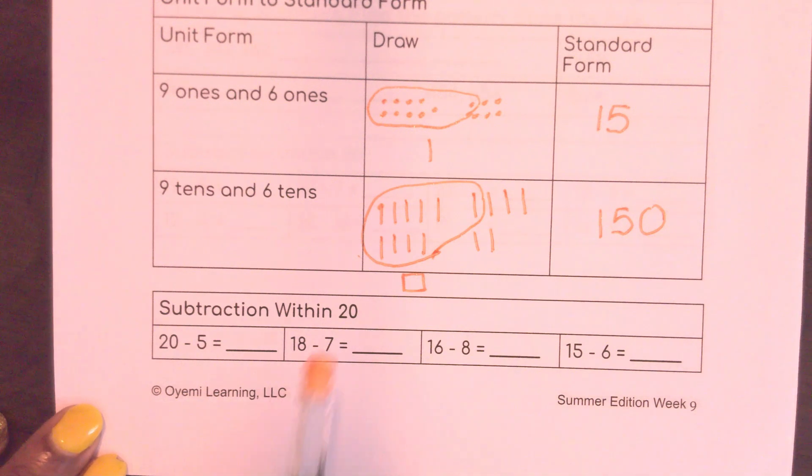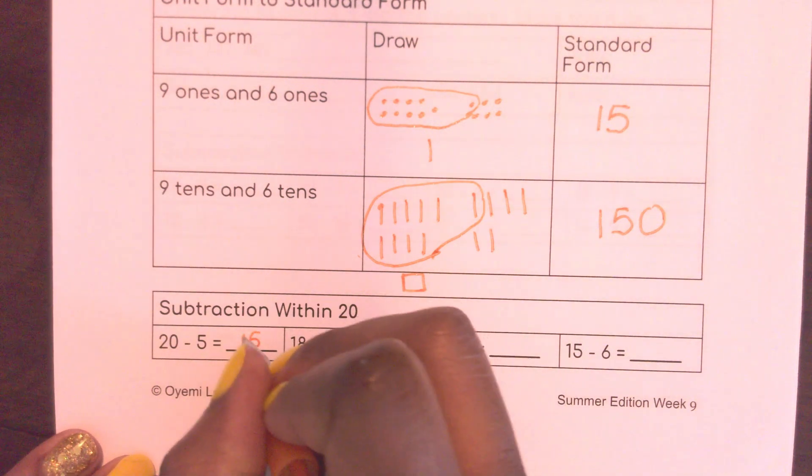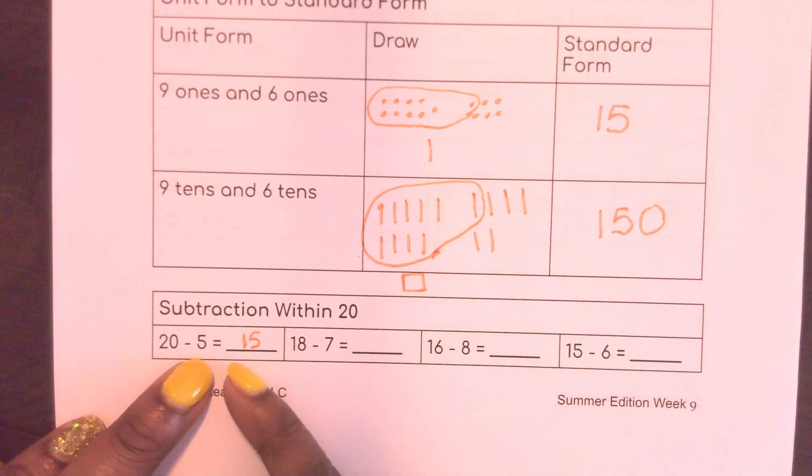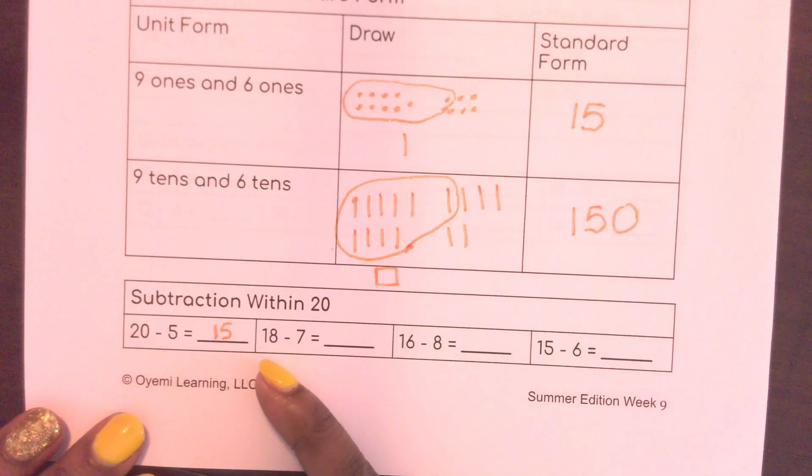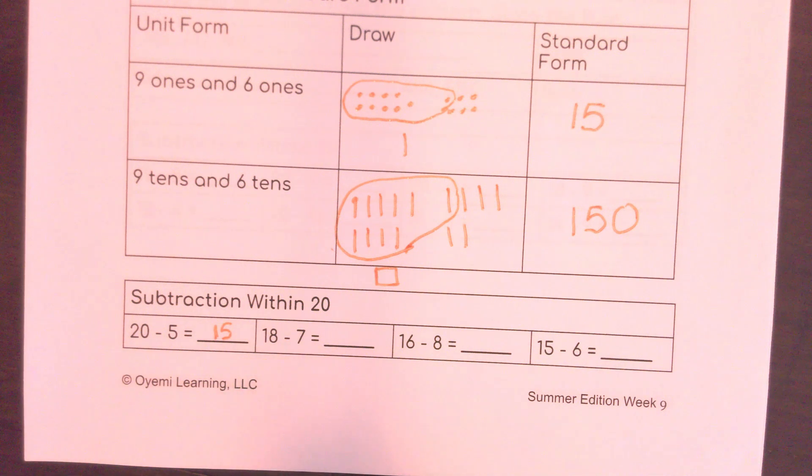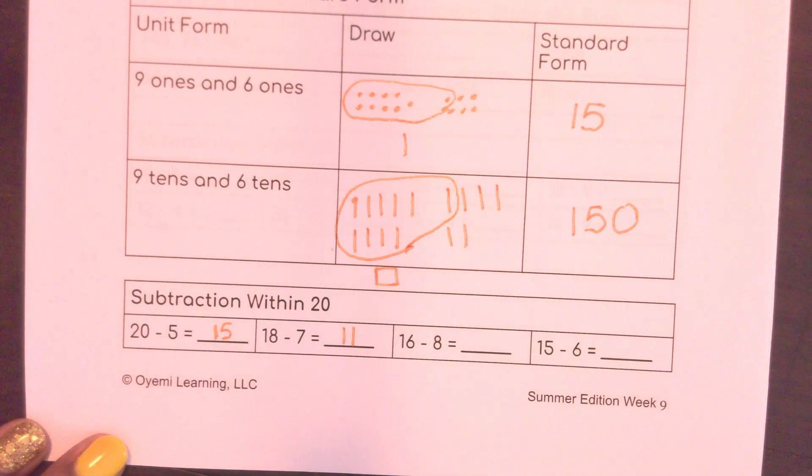So now I'm subtracting within 20. So if I know how to make a 10 then I also know how to make a 20. So here 20 minus 5 is going to give me 15. 5 plus 5 is 10 and I already have a 10 there, so that gives me the 20. 18 minus 7. So I have 18 and I just want to take 7 ones away from that. So if I take away 7 ones that will give me 11 and I can check it. 11 plus 7 is equal to 18.